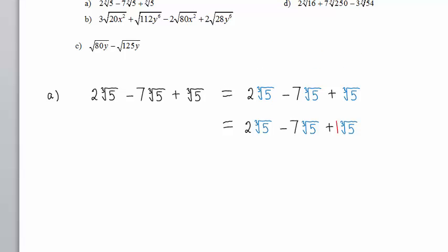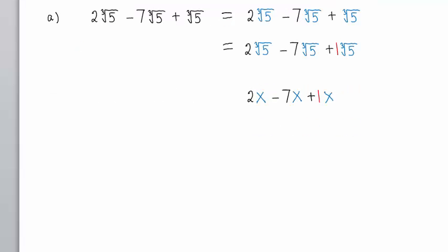We note that the coefficient of the third and last term is 1. We think in terms of like terms — how would we simplify 2x minus 7x plus 1x? We would add or subtract the coefficients: 2 minus 7 plus 1. 2 and 1 is 3, and 3 take away 7 is negative 4. This would be negative 4x. So likewise, the answer to our problem is negative 4 times the cube root of 5.